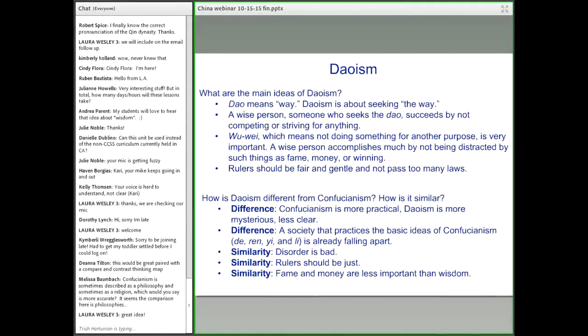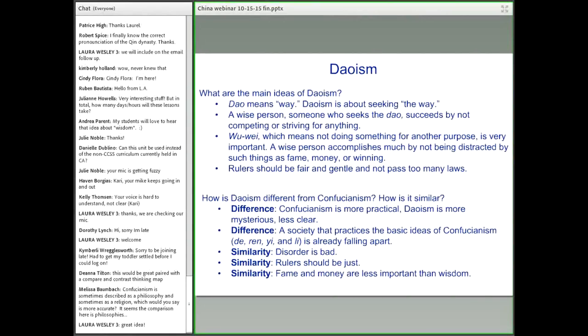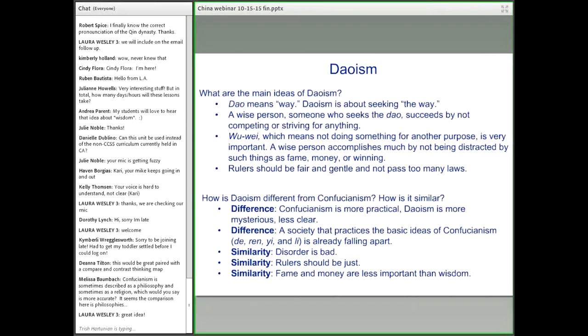The main difference from the lesson: Confucianism is more practical, Taoism is more mysterious and less clear. Another difference is Taoism thinks the basic tenets of Confucianism can be detrimental to society. It's important to see similarities—they both think rulers should be just and are both dealing with disordered society. Confucianism is sometimes described as a philosophy and sometimes as a religion. We present it as more of a philosophy. In this lesson, we're presenting them both as philosophies—approaches to life with profound effects on Chinese history.